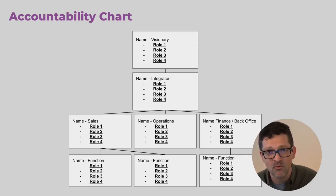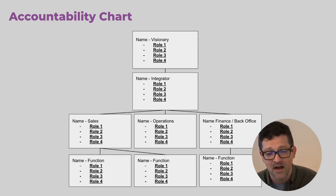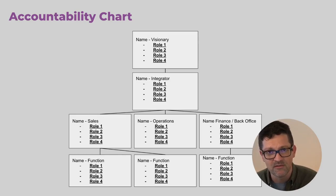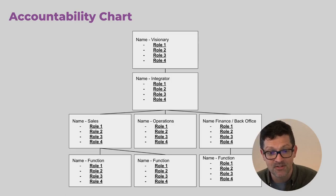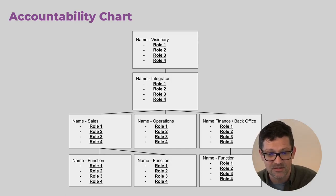In that book, he outlines the visionary role, which is typically the founder who sets the tone and sets the vision. That person has beneath them an integrator — a very different personality type, a person really focused on getting stuff done and very process-oriented. That person typically has at least three up to five different departments answering to the integrator — typically sales, operations, and back office finance.